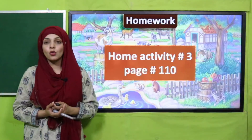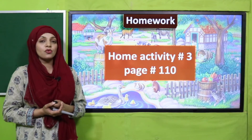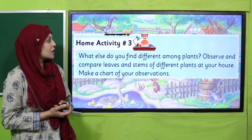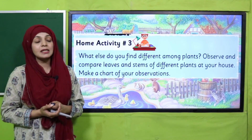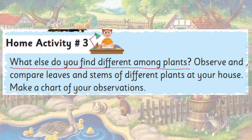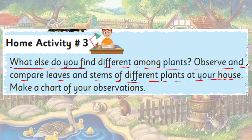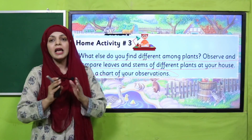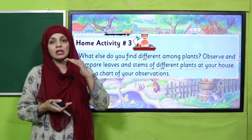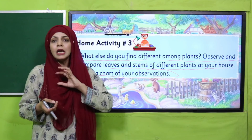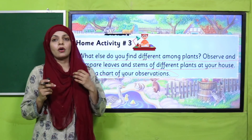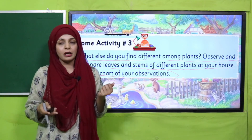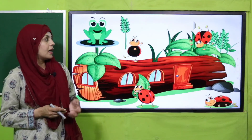Now it is time to note down your homework. You will do home activity number 3 on page number 100. It states: 'What else do you find different among plants? Observe and compare leaves and stems of different plants at your house and make a chart of your observation.' Observe the plants in your home, differentiate how they are different from each other, make a chart, note it in your science copy, and get it checked by your teacher in class.